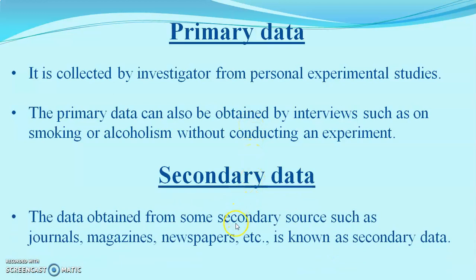Secondary data can be obtained from secondary sources — not by an experiment, not by primary effort, and not from any primary sources. Secondary sources include journalists, magazines, newspapers, etc. Secondary data can be collected by anybody, not only the researcher.